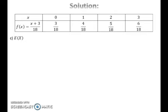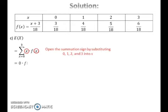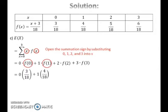To find the expected value of x, take the summation of x times probability for all x, i.e. for x from 0 to 3. Open the summation sign by substituting 0, 1, 2, and 3 into x, then substitute the values of the probabilities and calculate the expected value of x.